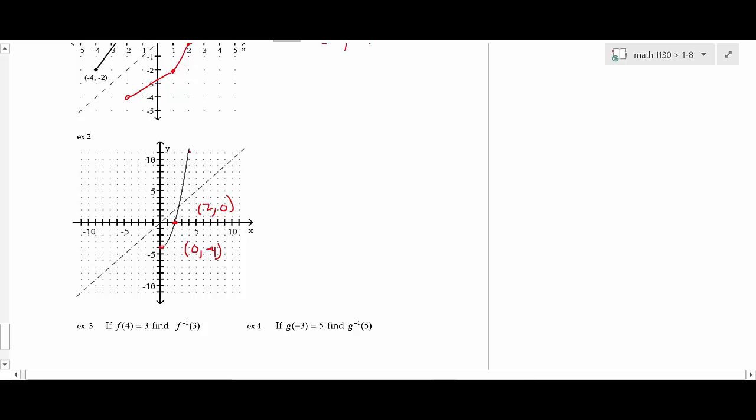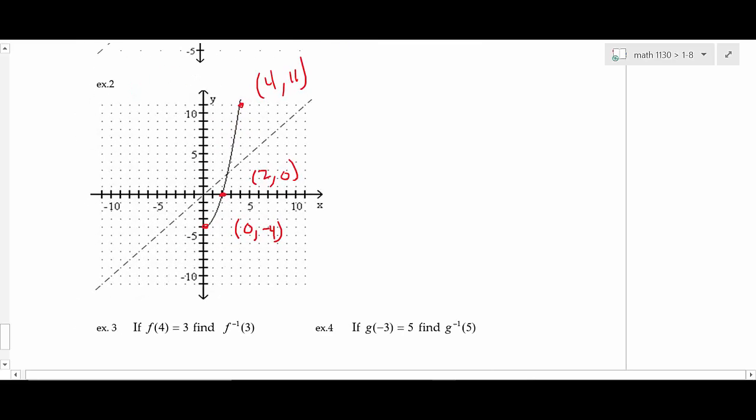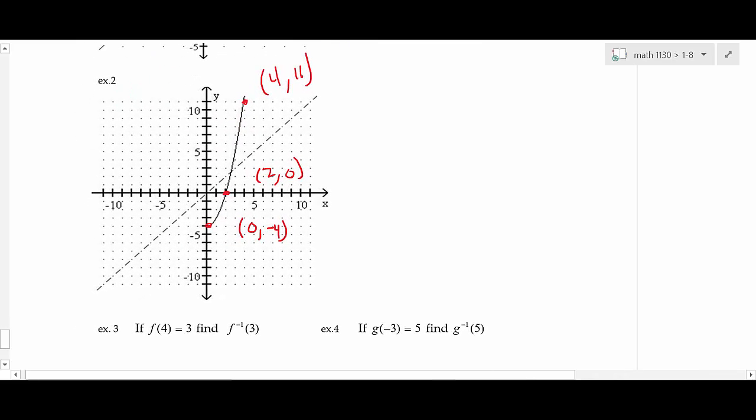And let me see if I can find one more. I like that one right there. Help me out. You guys are young and got good eyes. Is that 4, 11? Is that good? I can barely see sometimes on these little dots. So I think that's right. 4, 11. That's good enough. I think it may not be perfect.